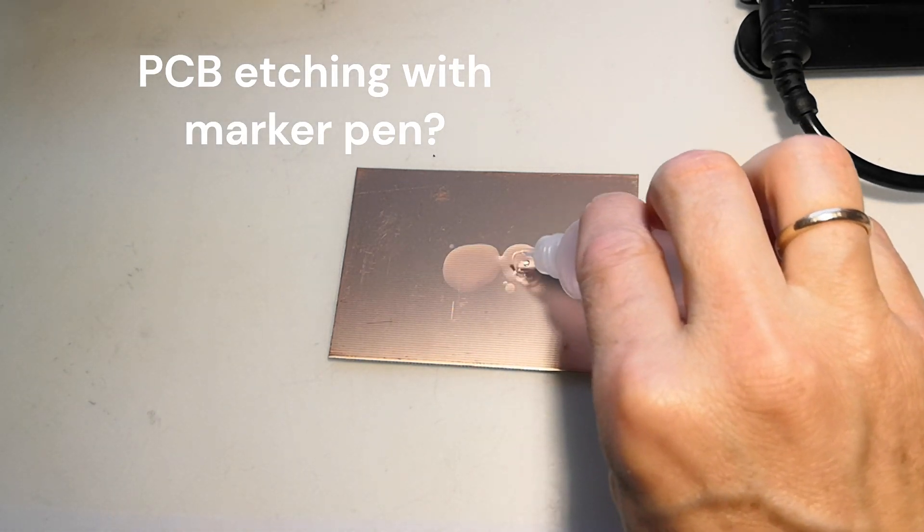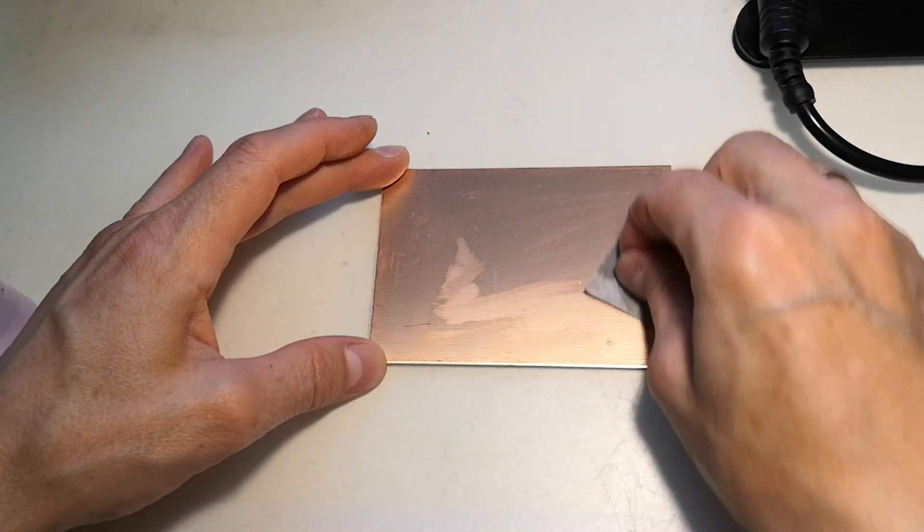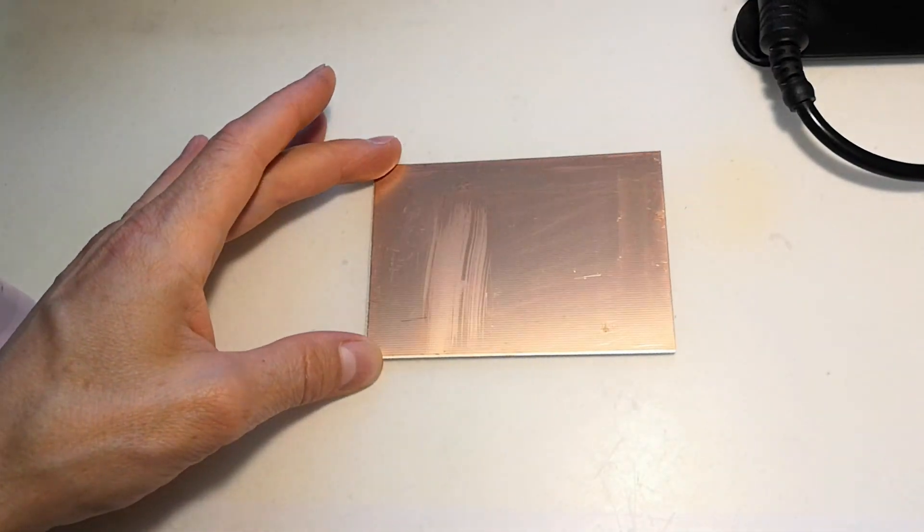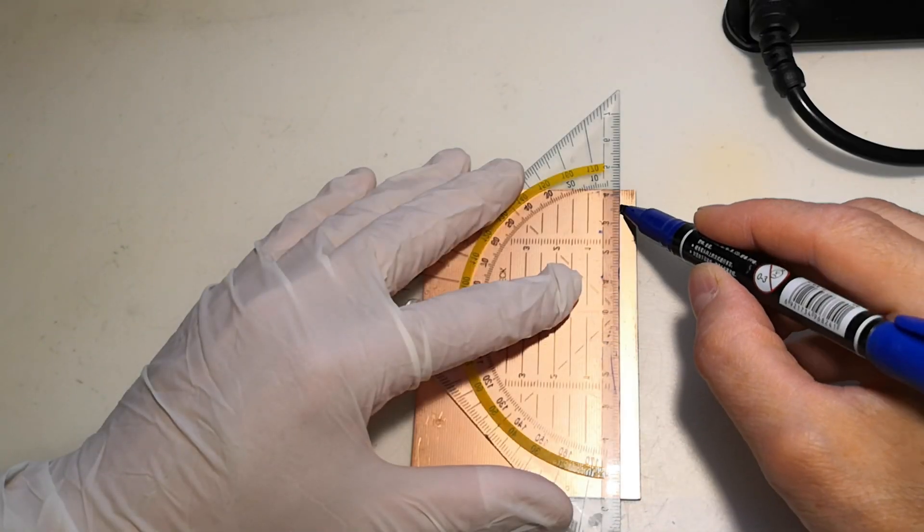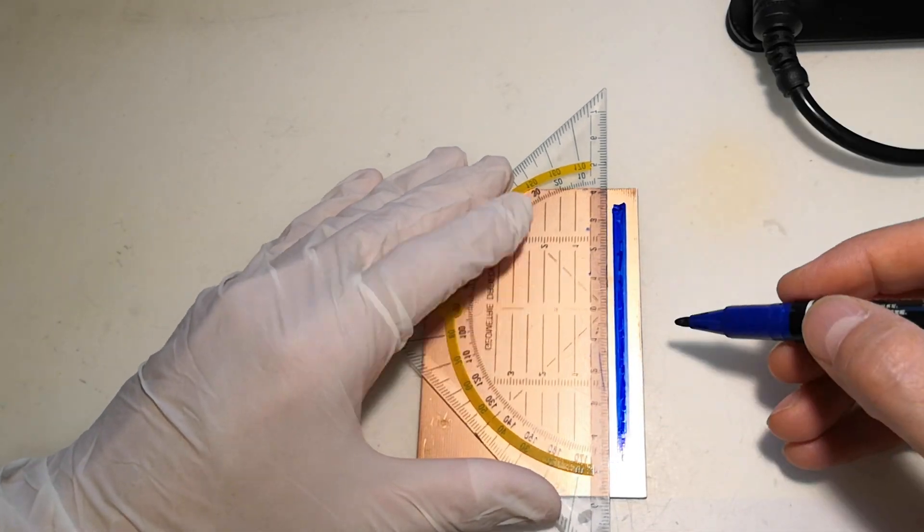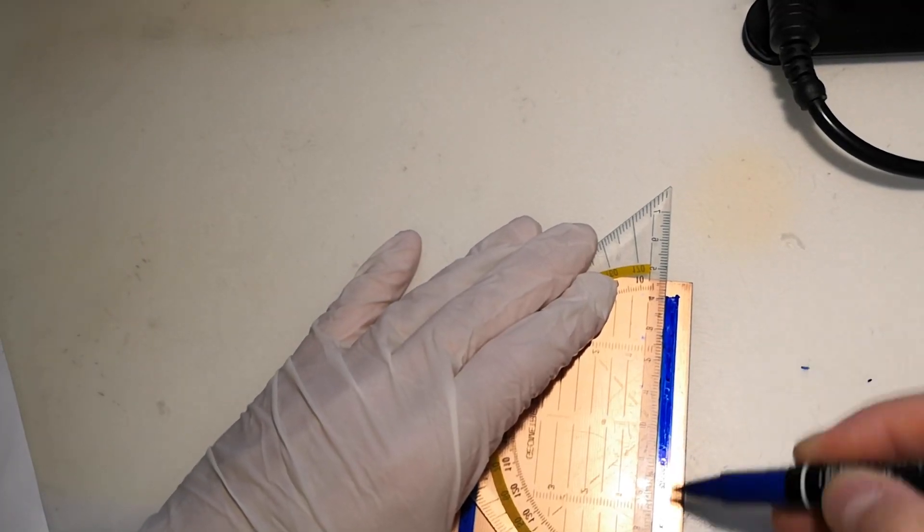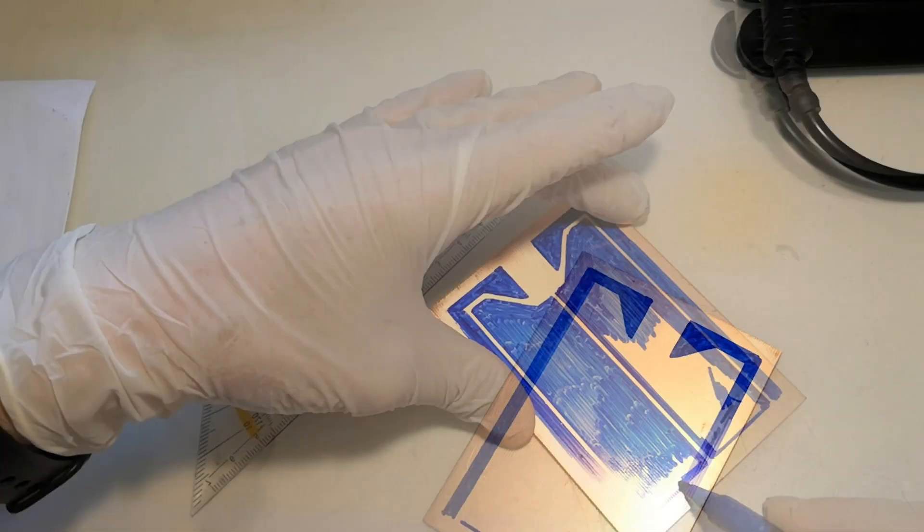I had a special pen long time ago with acid resistant ink, and I could make circuit boards with it. I don't have that pen anymore and I decided to try a normal marker instead. I had heard that normal marker will do.